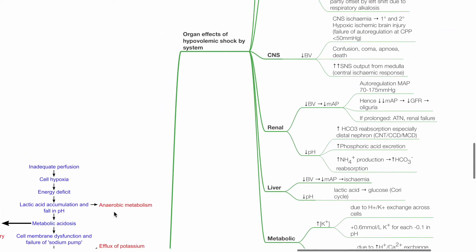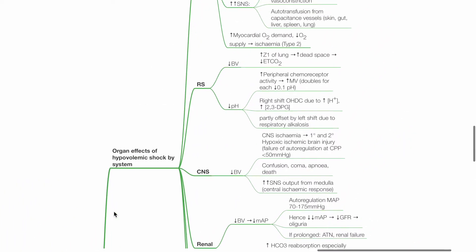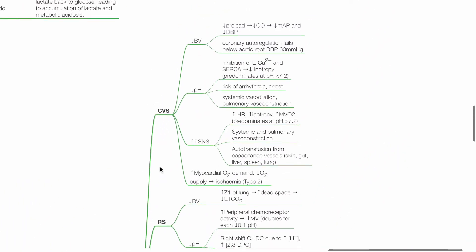Additional information: Organ effects of hypovolemic shock by system. For the cardiovascular system, reduced blood volume results in reduced preload, reduced cardiac output, leading to reduced MAP and diastolic BP. Coronary autoregulation fails below aortic root DBP of 60 mmHg. Acidosis inhibits L-calcium channel and SERCA, which reduces inotropy. This predominates at pH less than 7.2. There is risk of arrhythmia and arrest.